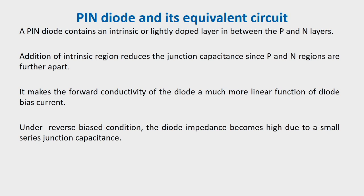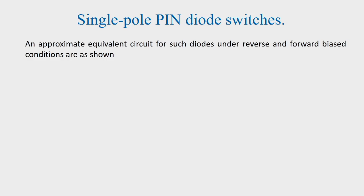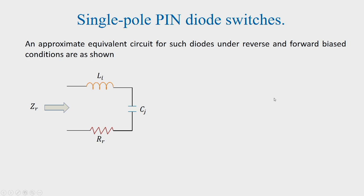Under reverse bias condition, the diode impedance becomes high due to a small series junction capacitance. Whereas under forward bias condition, the junction capacitance is not present and the diode is in a low impedance state. This is in brief how the diode behaves under reverse and forward bias conditions. We represent an approximate equivalent circuit for such a diode under reverse and forward bias conditions as shown in the figures.